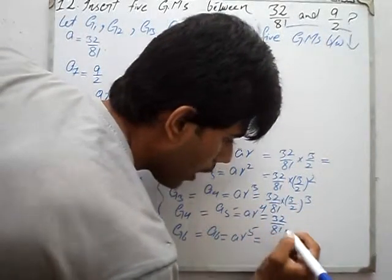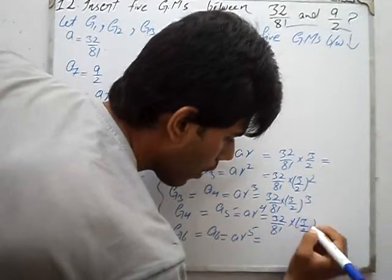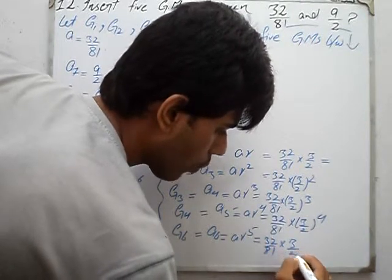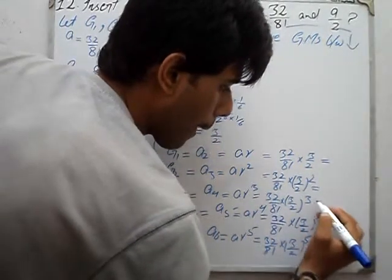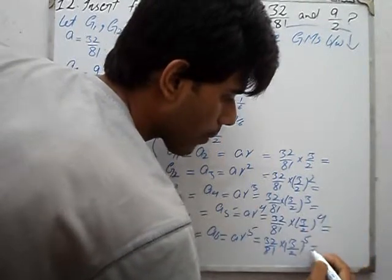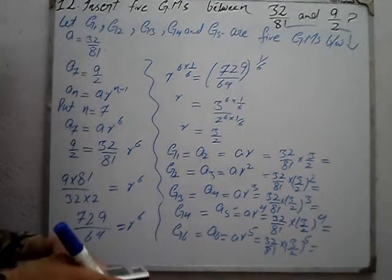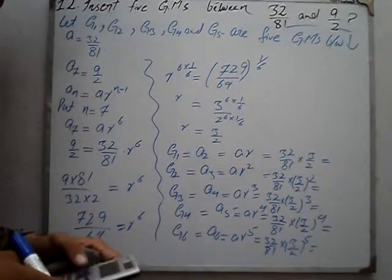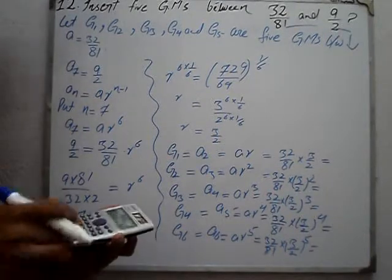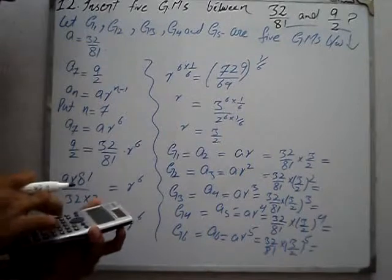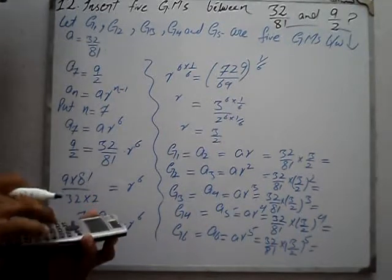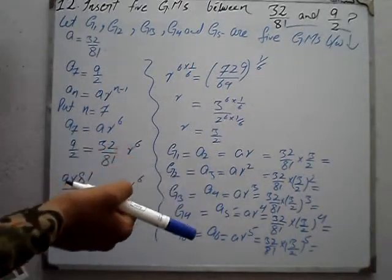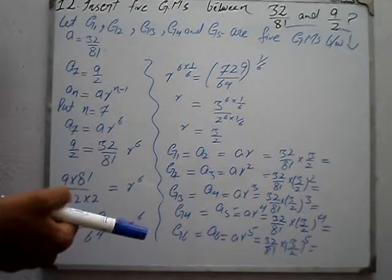G1 equals 32 over 81 multiplied by 3 over 2. Solving this, the answer is 16 over 27. So G1 is equal to 16 over 27.